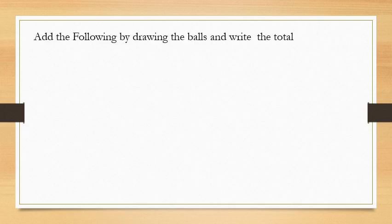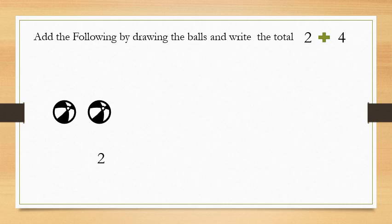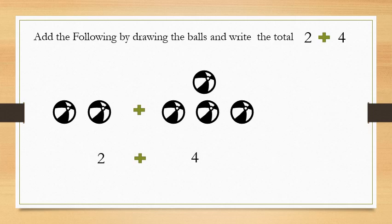Now, let's do another question. Add the following by drawing the balls and write the total. The question is 2 plus 4. You have to draw 2 balls, then put the plus symbol, then draw 4 balls, and find out the total. You can find the total by counting them: 1, 2, 3, 4, 5, 6. So there are 6 balls. The total of 2 plus 4 equals 6.